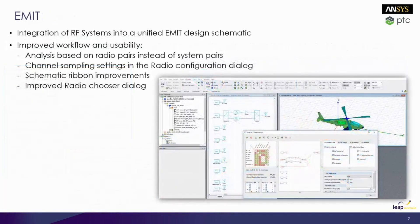The next feature update is EMIT, which is integrated within ANSYS Electronic Desktop. ANSYS EMIT provides the complete simulation framework for RF scenario-level modeling to predict, diagnose, and mitigate complex RFI effects. ANSYS EMIT allows multiple transmitter and receiver systems to be analyzed for coupling and co-site interference. ANSYS EMIT provides a powerful workflow for RFI simulation, working along with ANSYS HFSS, SAVANT, and ANSYS RF Option. This capability of EMIT is now available within the ANSYS Electronic Desktop GUI with improved workflow and usability in terms of analysis based on radio pairs instead of system pairs, channel sampling settings in the radio configuration dialog, schematic ribbon improvements, and improved radio chooser dialog.